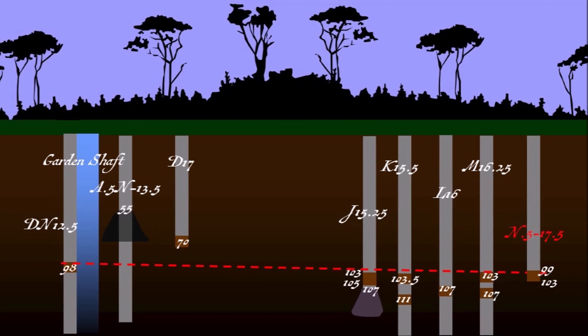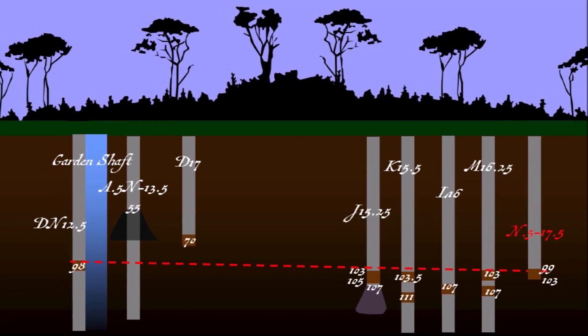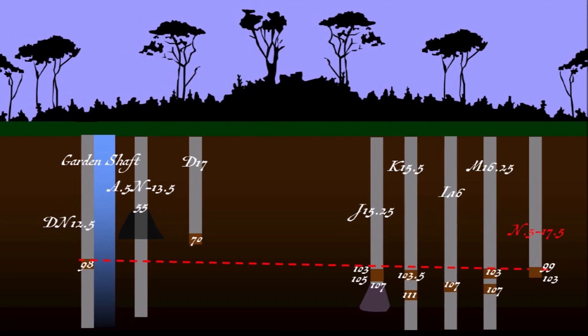Matheson observes that the wood is shallower than expected, which leads him to speculate that it might belong to a different structure like another tunnel.